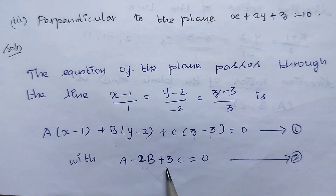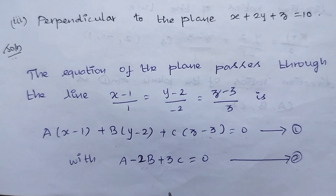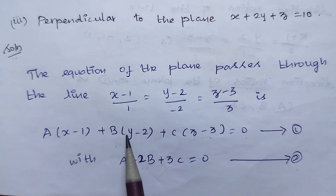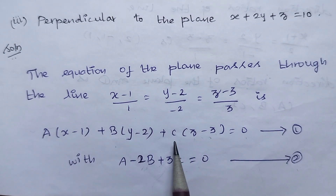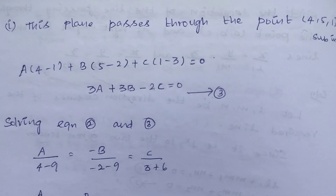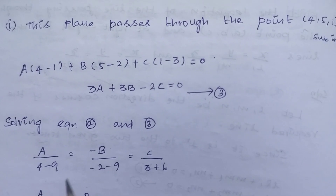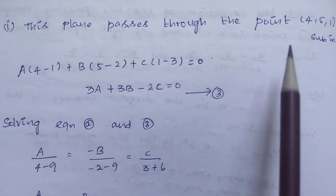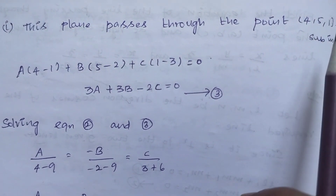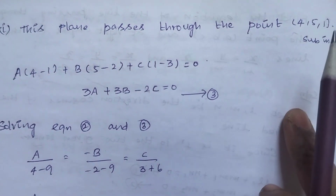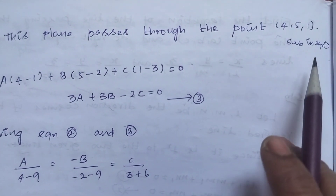The direction ratios are A, B, C. Using equation 1, this plane passes through the point (4, 5, 1). Substituting into equation 1: A(4-1) + B(5-2) + C(1-3) = 0.